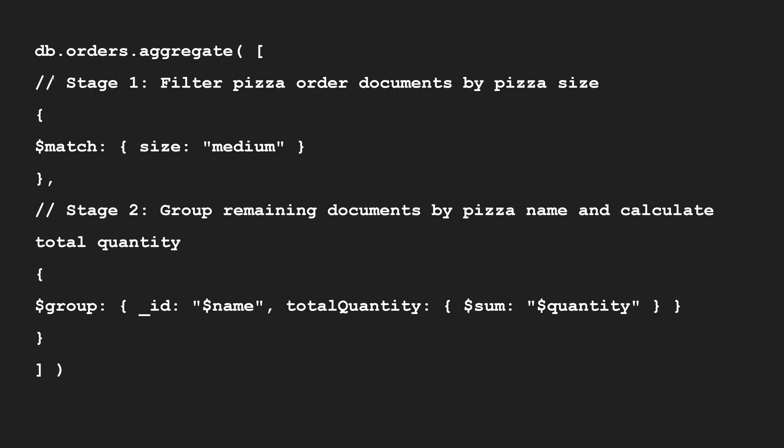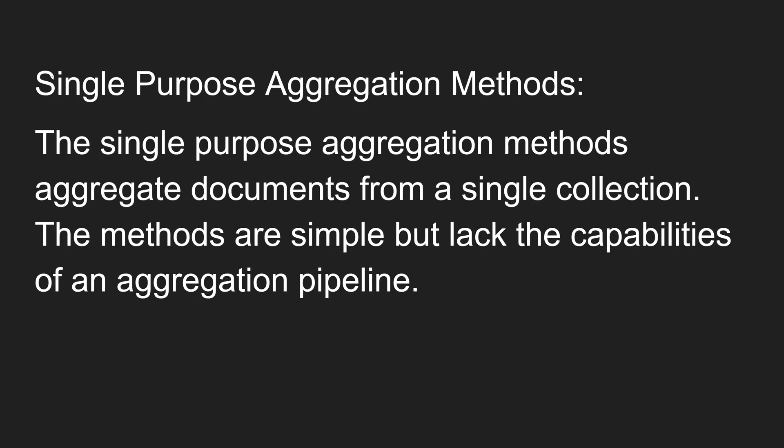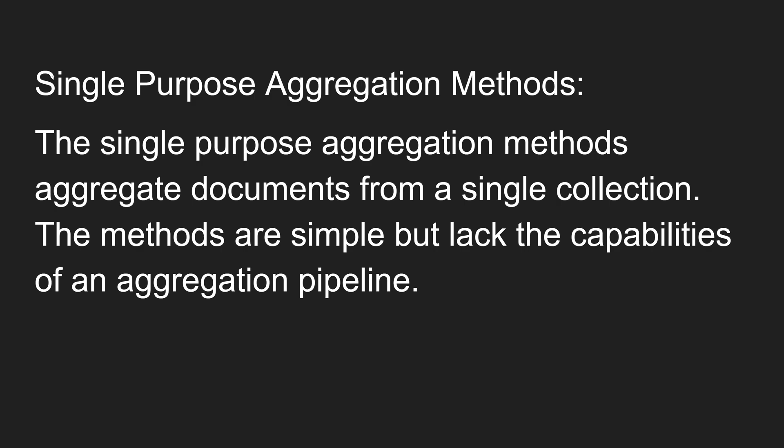In the aggregation pipeline, we have operators like dollar match, dollar group, dollar project - which specifies which fields to include - and dollar unwind, among many others. We will explore all these aggregation operators in detail with real-time scenarios showing how to use them in MongoDB queries. Hope you understood the introduction to aggregation framework. If you have any doubts or suggestions, please post them in the comments below. If you like this video, please support me by subscribing to my channel. Thank you.